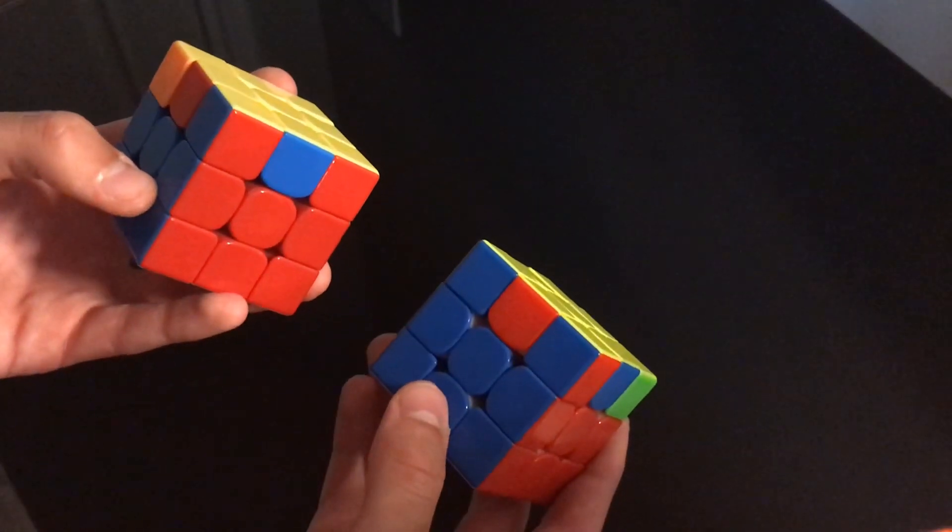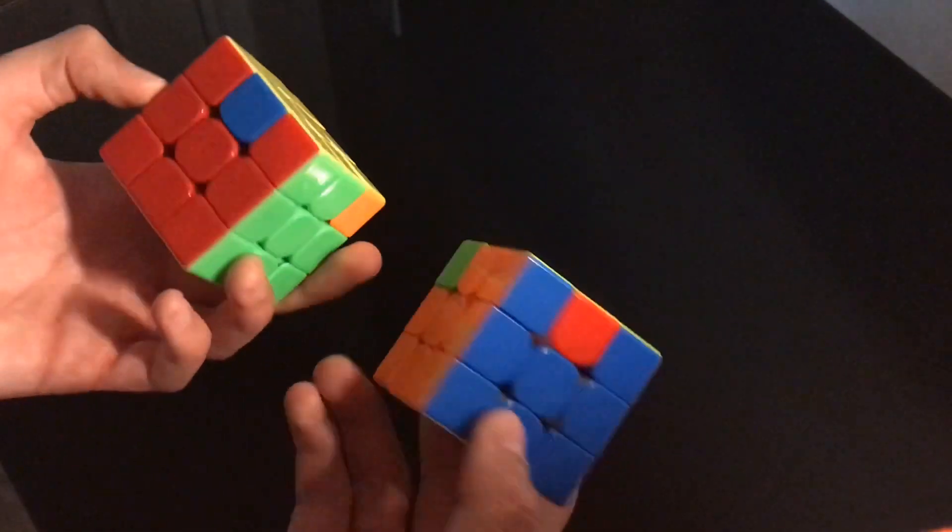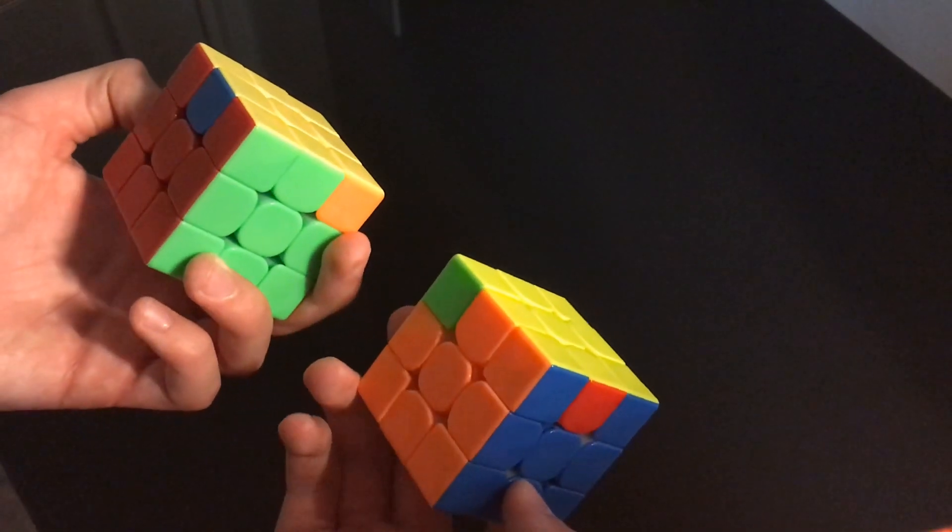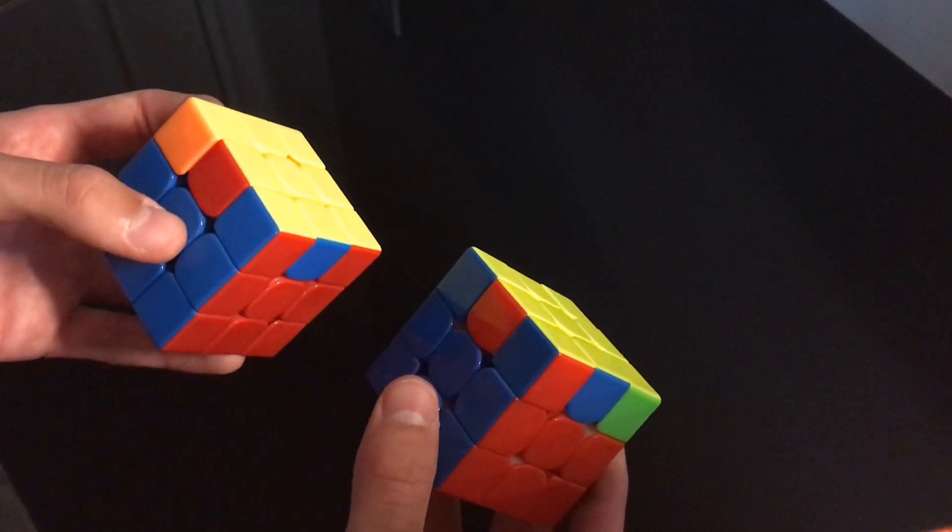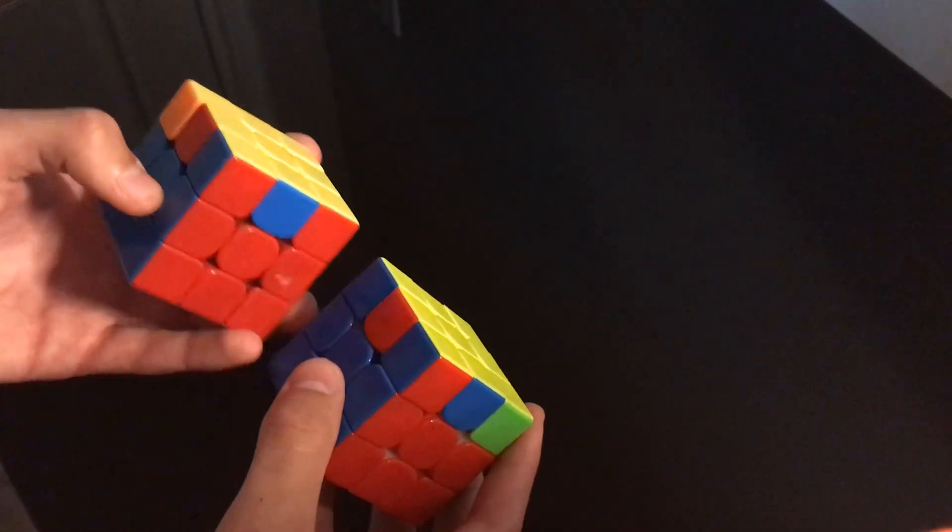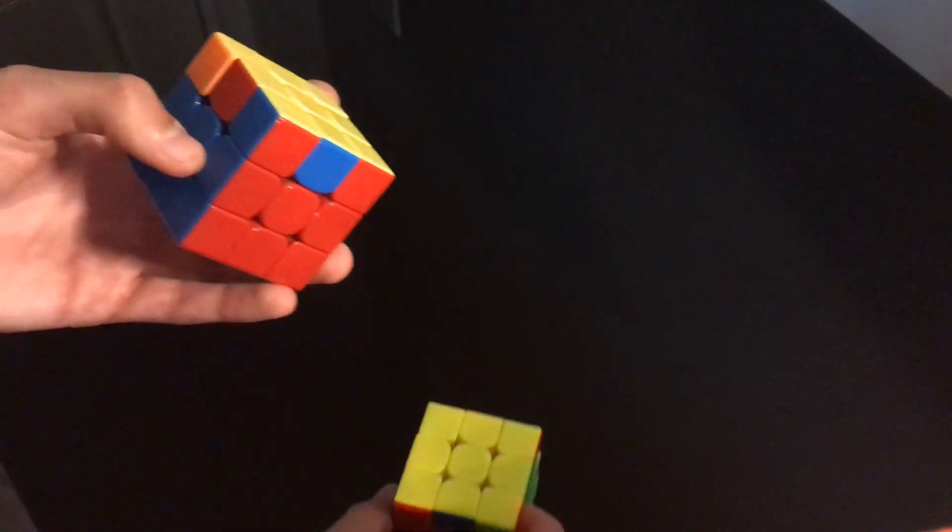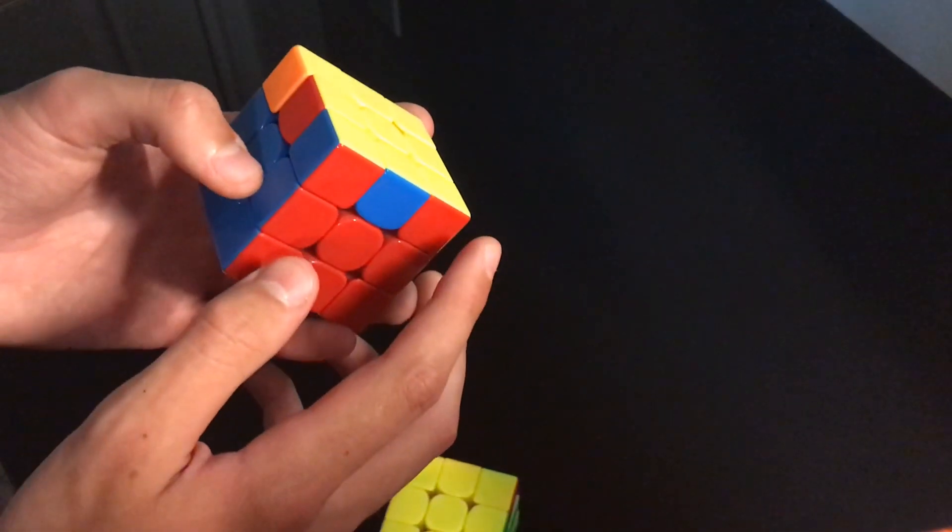Okay, so first we're going to start off with R perms. So if you couldn't tell, these both are actually R perms if you rotate the cube. However, what we want to do is two-sided PLL recognition just because it's faster. So how you would recognize R perms without seeing the block is you have a checker pattern of five.